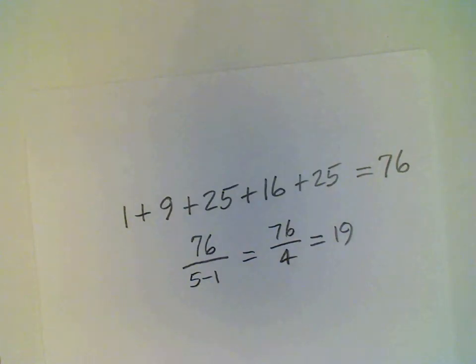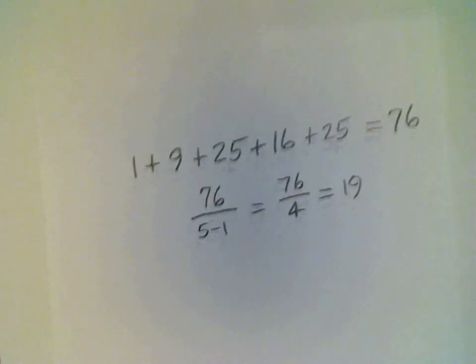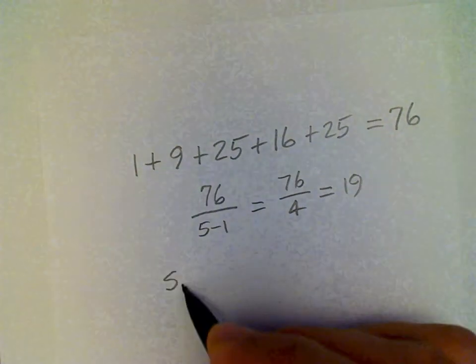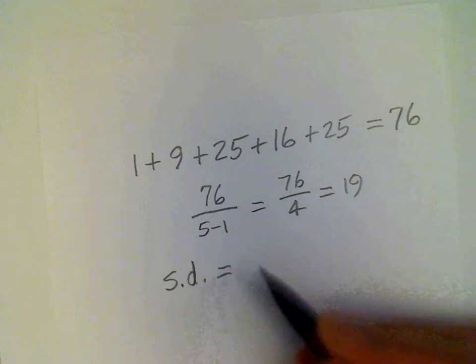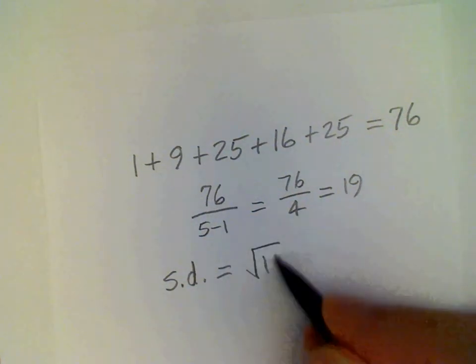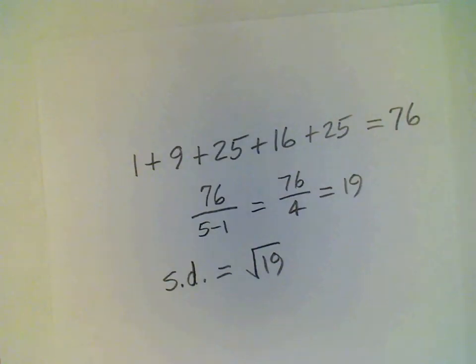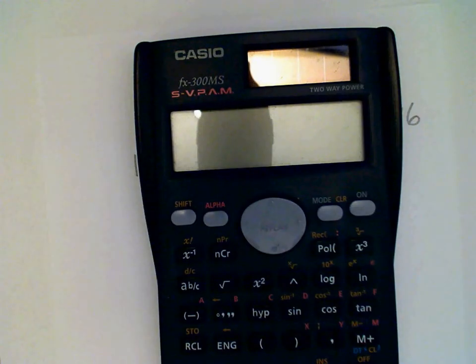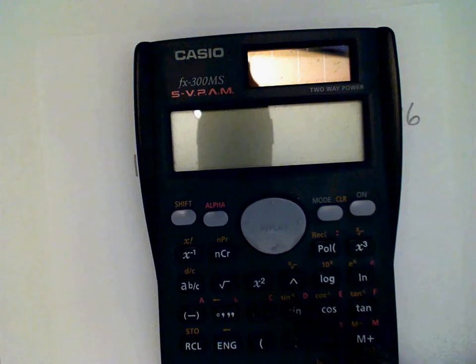Finally to compute the standard deviation we need to take the square root of that answer. So standard deviation is square root of 19. And we can find on our calculator, it's easy to find that using this key right here.